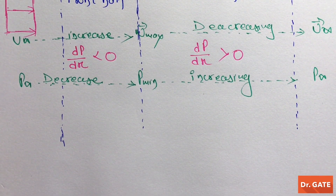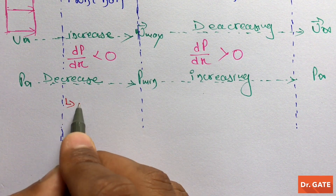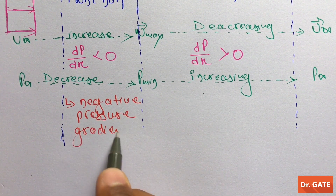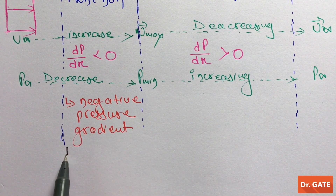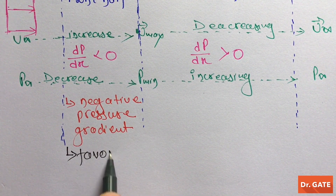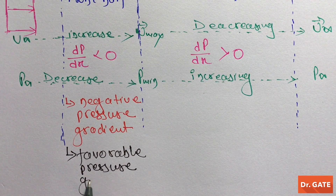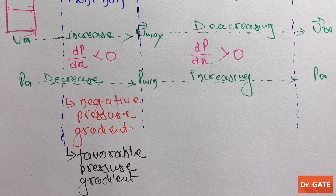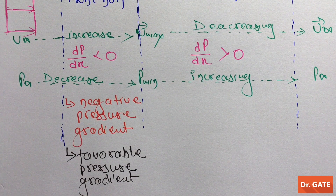On the front half of the aerofoil there is a negative pressure gradient, which is also called a favorable pressure gradient — because it accelerates the flow.